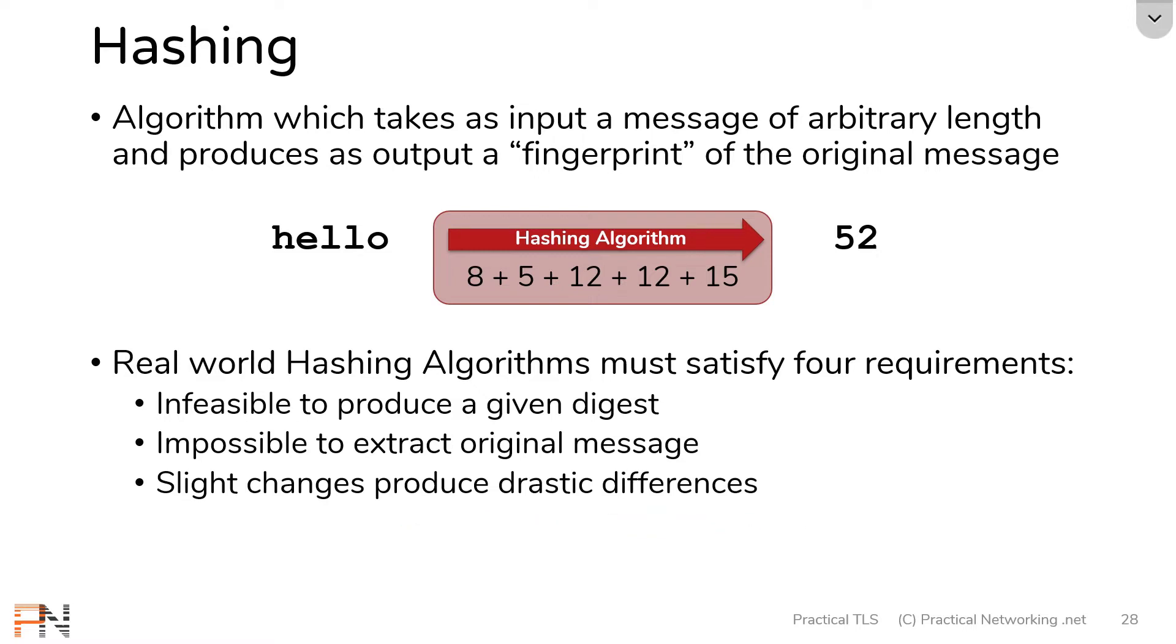And the last requirement for a hashing algorithm is that the resulting digest must be fixed width, which is to say, always produce the same length digest. Here we hashed the word hello and got 52. If I hashed the string how's it going, we would probably get a larger number. You can infer from the size of the digest of our algorithm the size of the original message that we hashed. That's bad. We don't want that. In a real world hashing algorithm, whether you hash one letter, one word, one sentence, or one entire book, the resulting digest is always the same length.